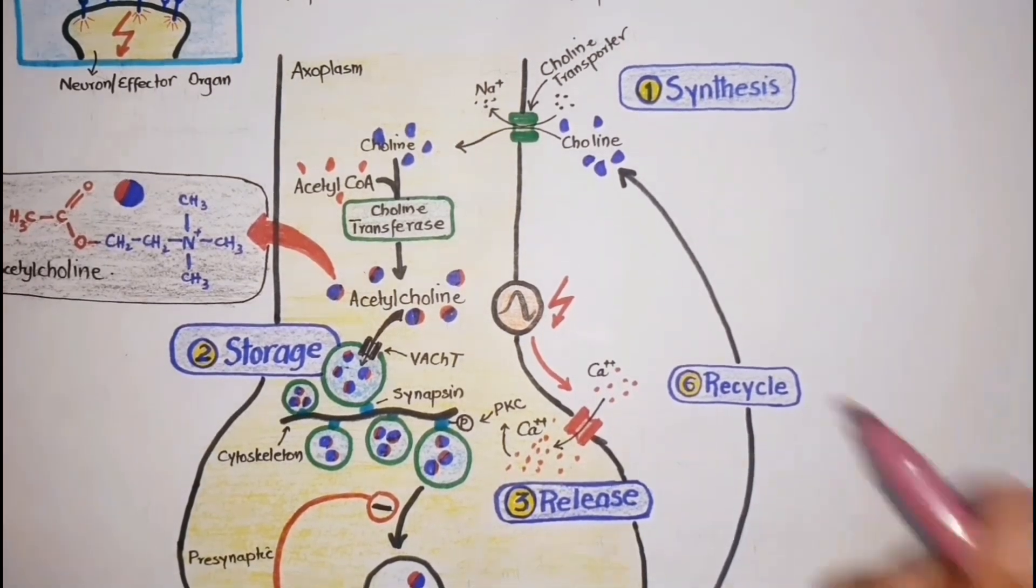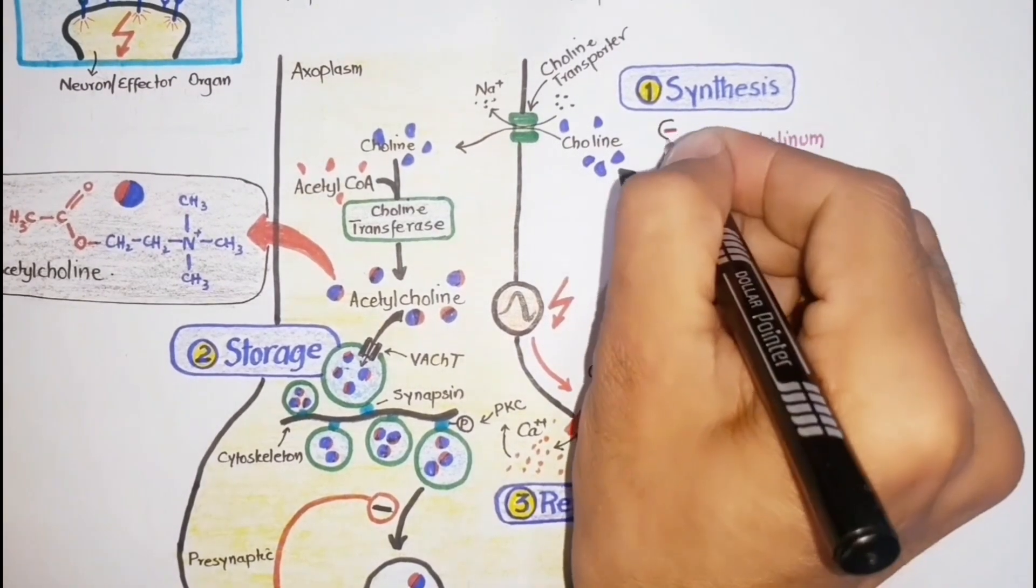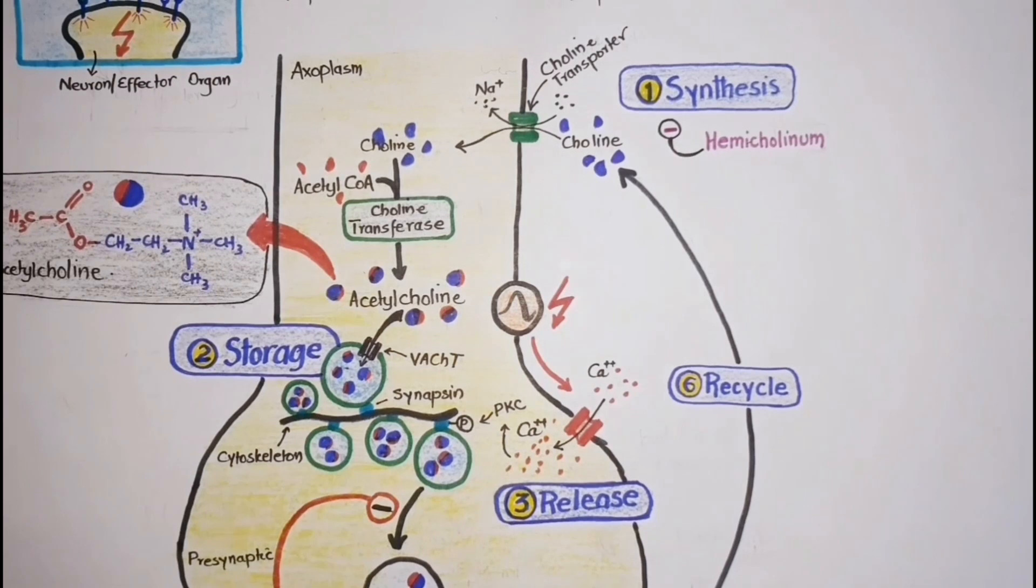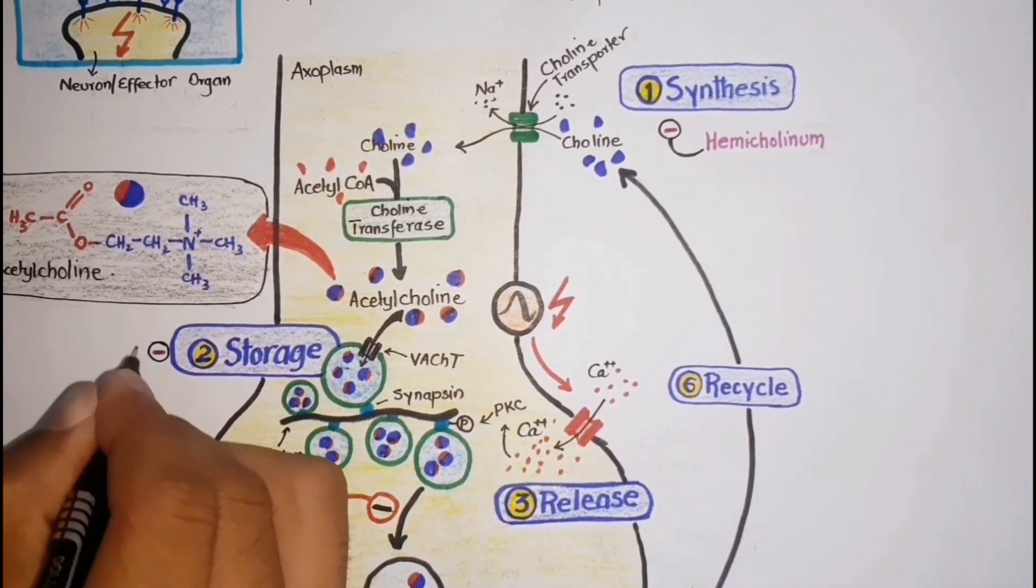Hemicholinium is a drug which blocks choline uptake into the axoplasm by interfering with the choline transporter, while the active transport of acetylcholine into synaptic vesicles is blocked by vesamicol.